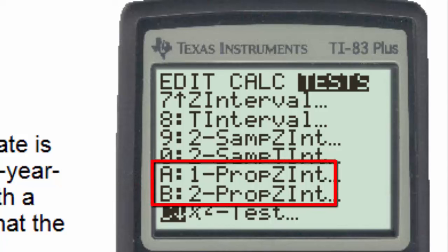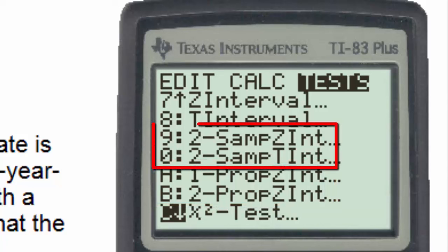Letters A and B refer to confidence intervals about a population proportion or percentage. Choices 9 and 0 refer to confidence intervals in which we are talking about two different populations, hence the number 2,